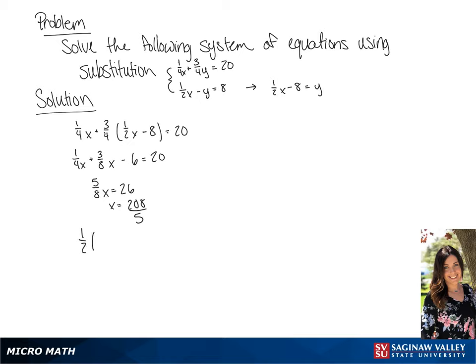Now if we plug 208 over 5 for x in the second equation, we get 1 half times 208 over 5 minus y equals 8. If we change the 8 to 80 over 10, which allows us to subtract 208 over 10 more easily, we get negative y equals 128 over 10, or y equals 128 over 10, which we can reduce to 64 over 5.